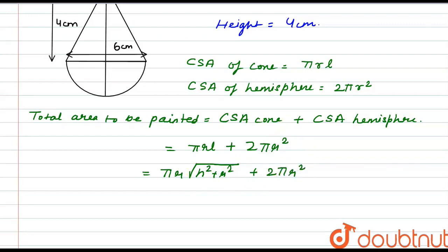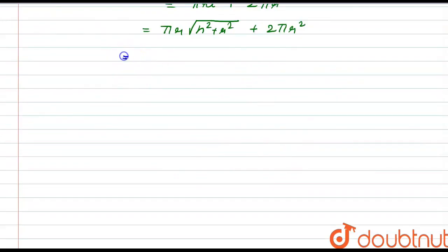Now if you put the values here, we get π × 3 × √(4² + 3²) + 2π × (3²).